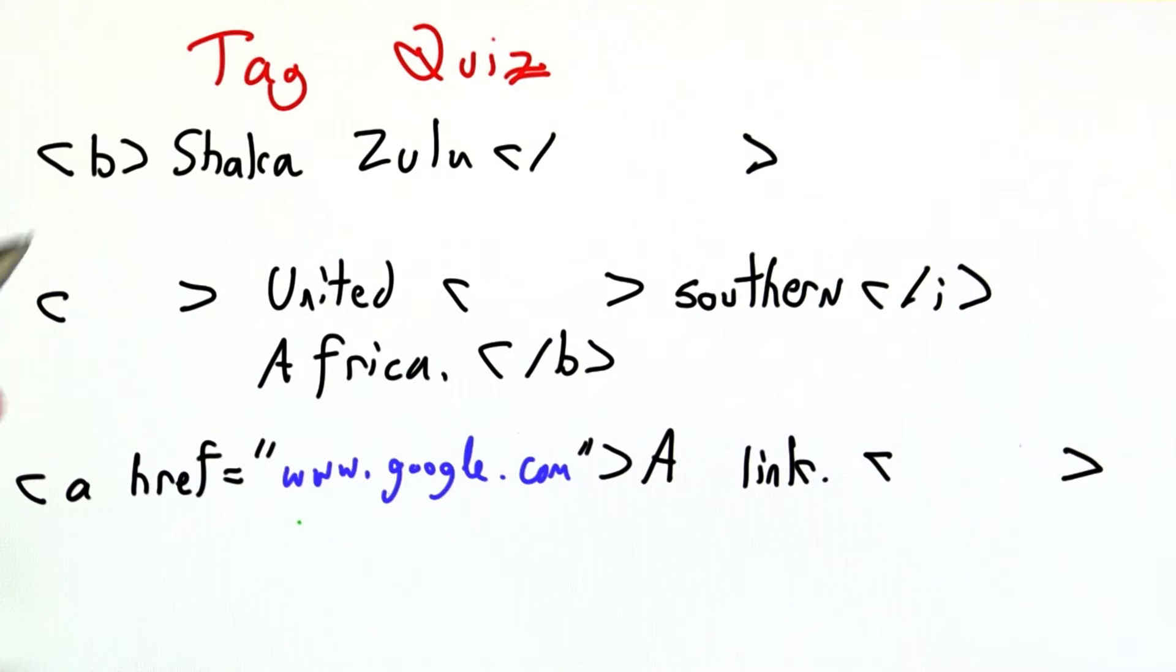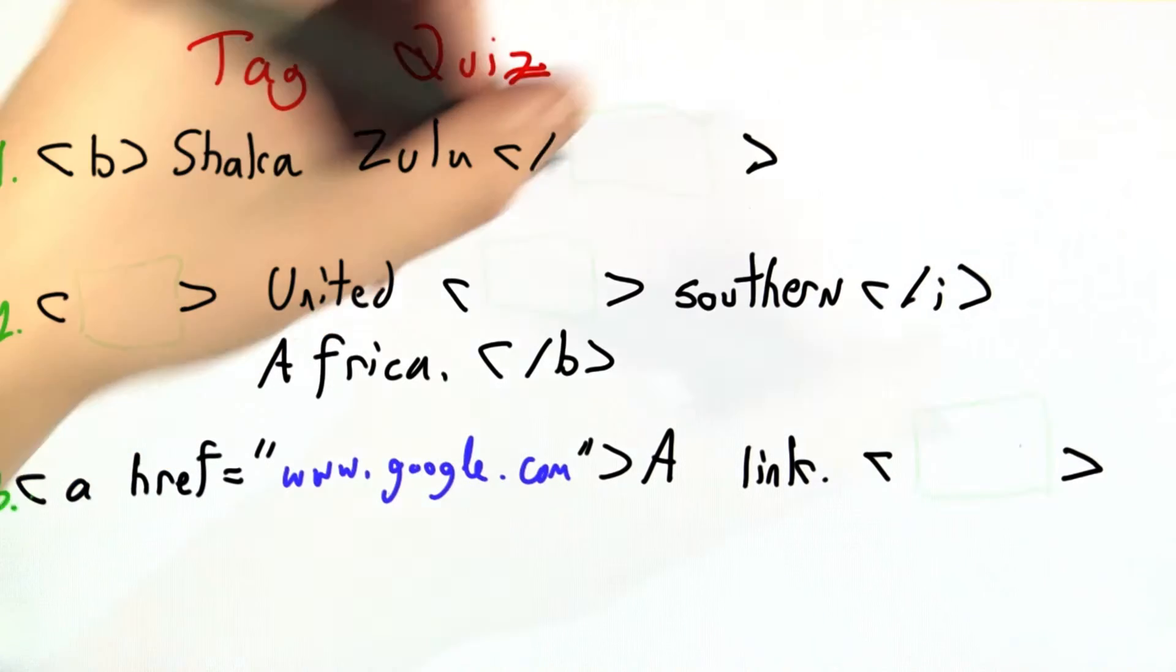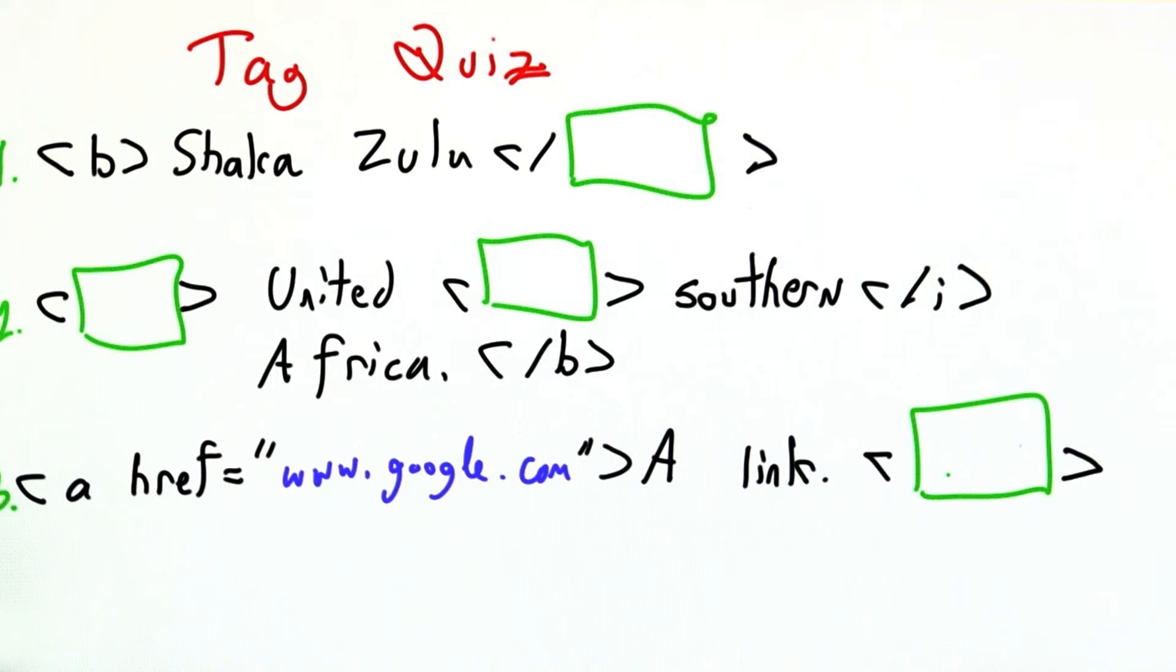I have written three HTML fragments, but I've left some things blank. What I would like you to do is fill in each blank with the word necessary for each fragment alone to be well-balanced HTML, to have its tags match up perfectly.